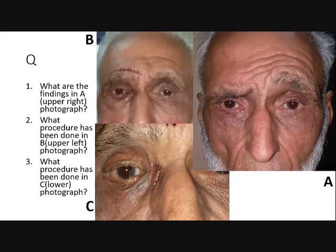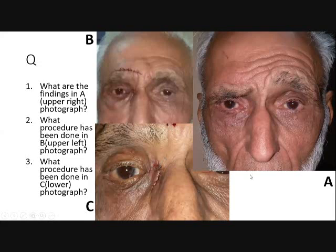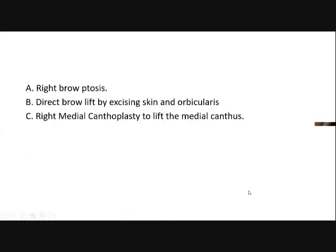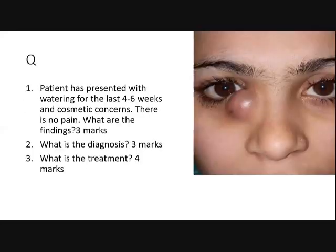There is brow ptosis and direct brow lift by excising the skin and orbicularis, and the medial canthal area has been lifted by medial canthoplasty. So this is a case of facial palsy — very common. We can also have an endoscopic brow lift.